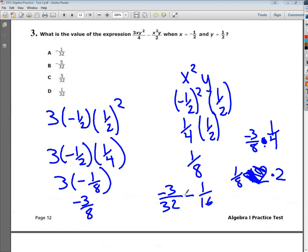And that's a subtraction question. From here, I just need to find common denominator. So, negative 3 over 32 minus 2 over 32. So, negative 3 minus 2 is negative 5 over 32. That's one way to do it. So, you get B for your answer for that one.